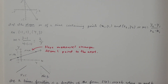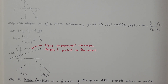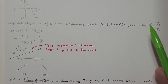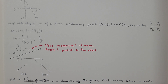The slope m of a line containing the points (x₁, y₁) and (x₂, y₂) is m equals (y₂ minus y₁) divided by (x₂ minus x₁), or sometimes we say change in y over change in x. We're looking at how y is changing by computing the difference, divided by how x is changing.